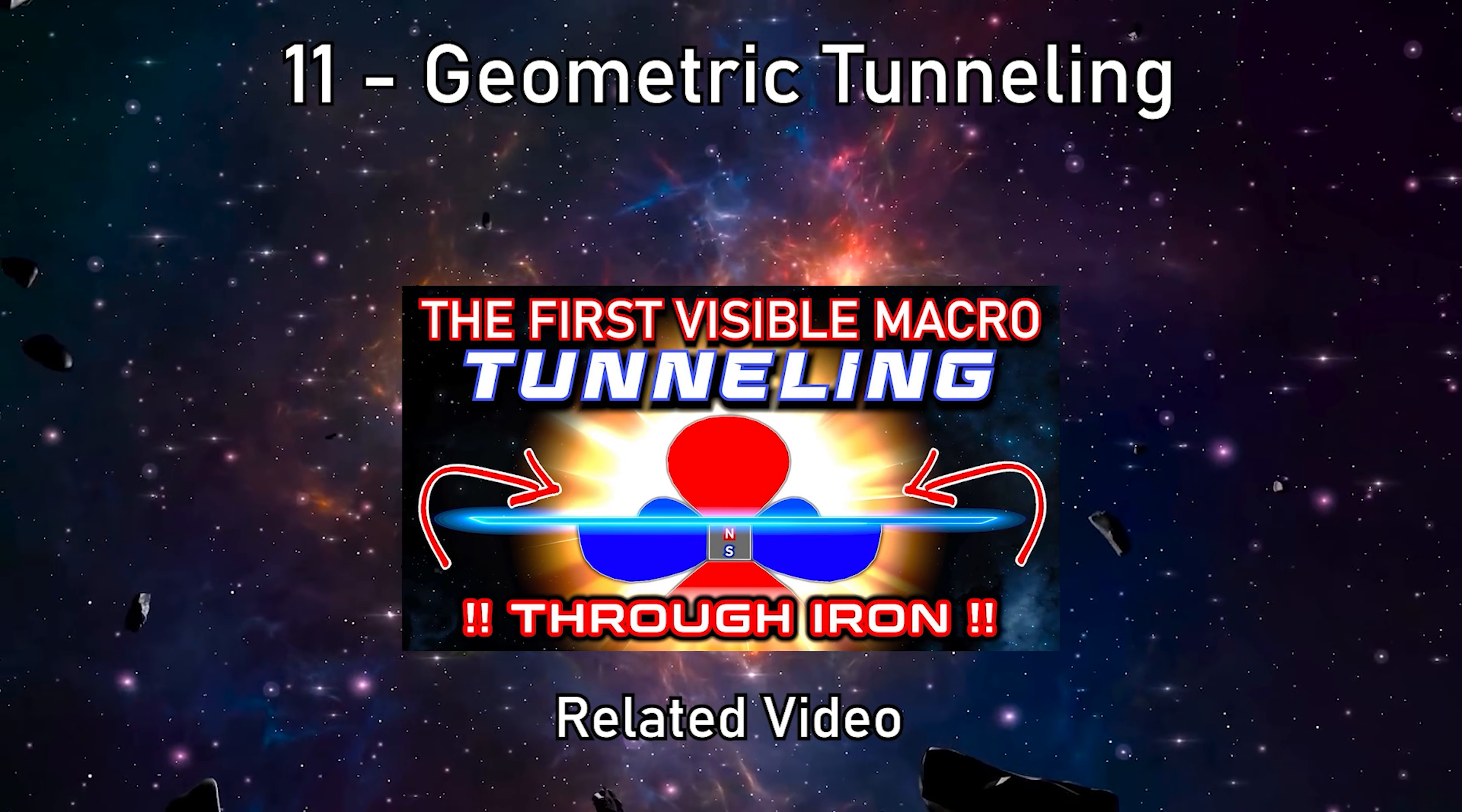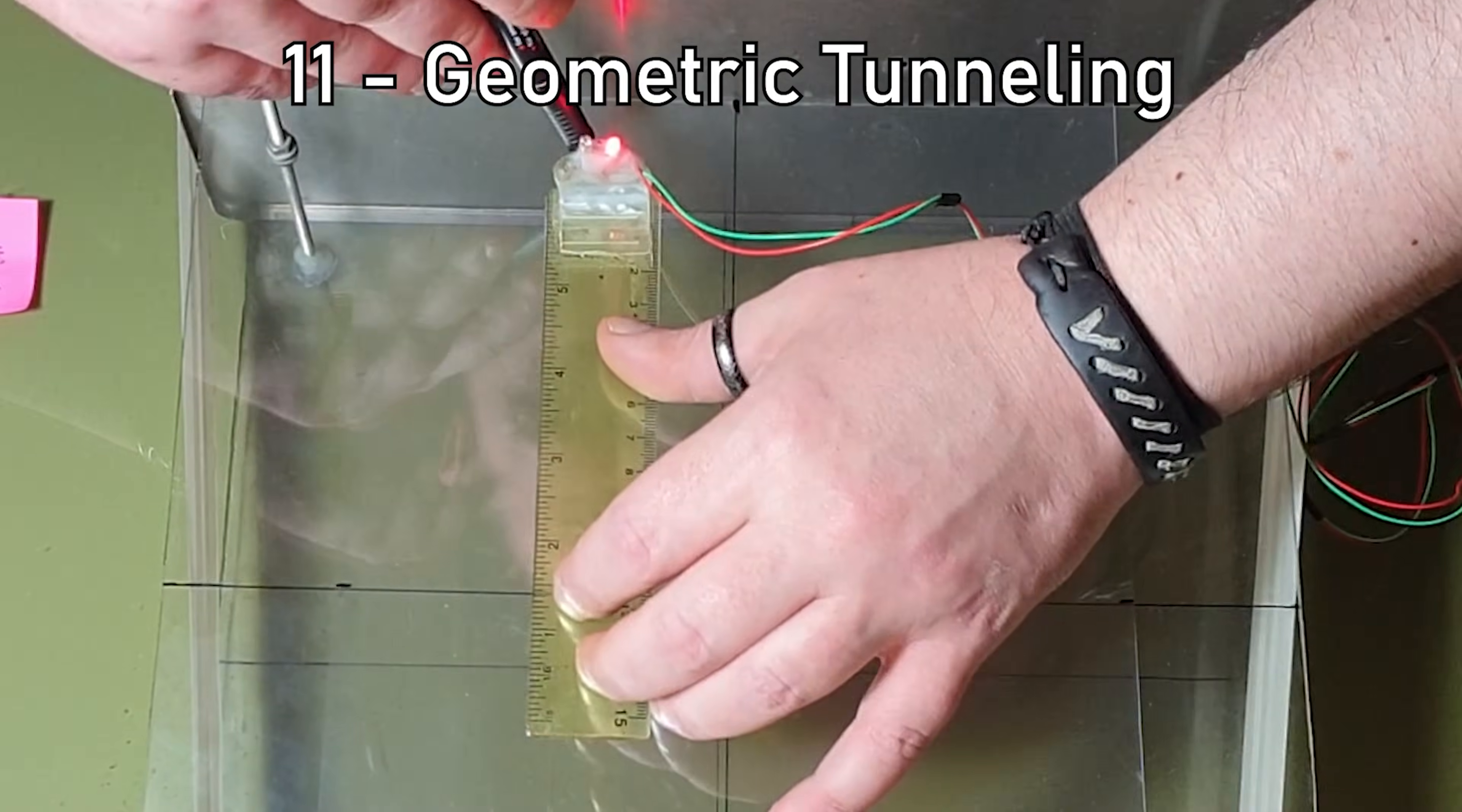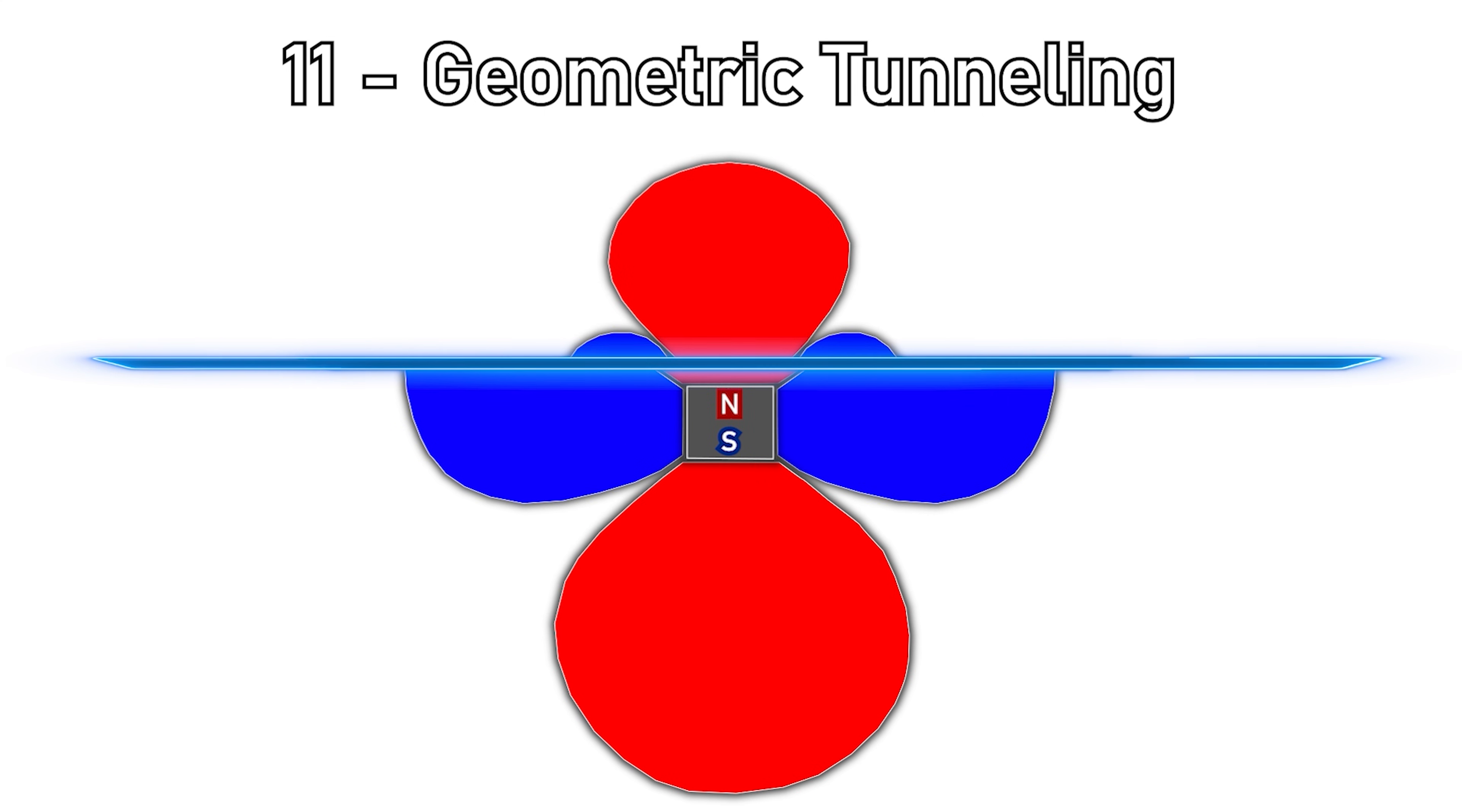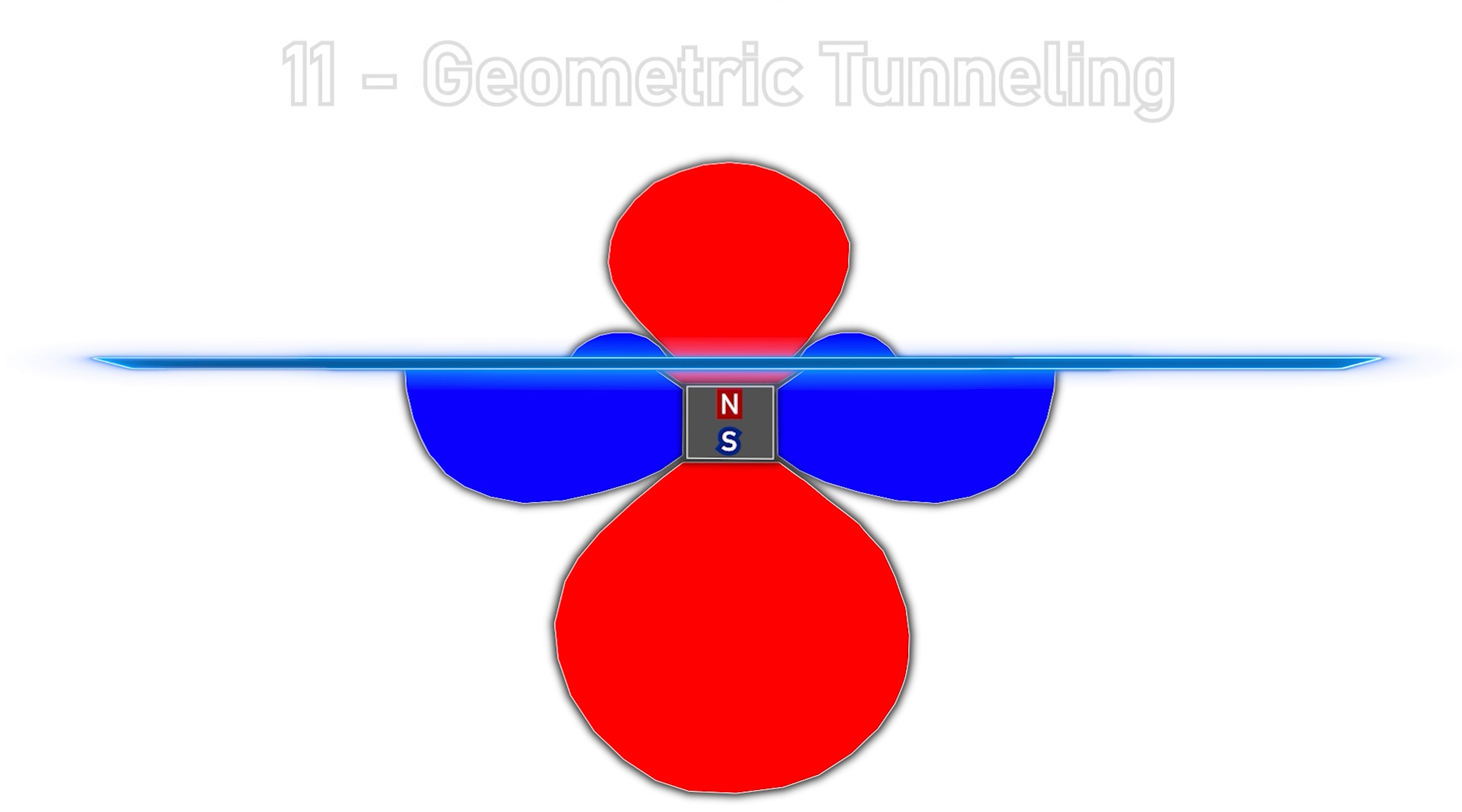11. Geometric Tunneling. It is experimentally possible to observe geometric quantum tunneling of the magnetic field. The geometry crosses a barrier while preserving the same topological properties associated with a wave function overcoming a potential barrier. This is not a simple penetration of the field, but the conservation of the informational structure. At this point, let's stop for a moment.